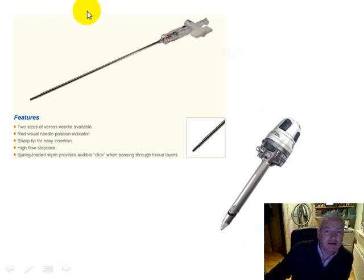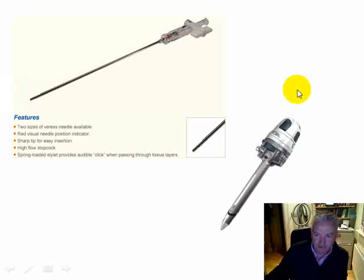Also, when performing laparoscopic surgery, we use the Varese needle, which has got a spring-loaded tip, and this is for insufflating the abdomen. And this is for putting in carbon dioxide. Following the formation of the pneumoperitoneum, a port may be inserted.